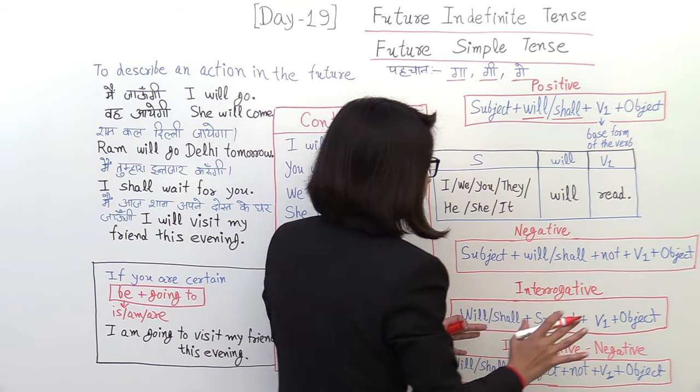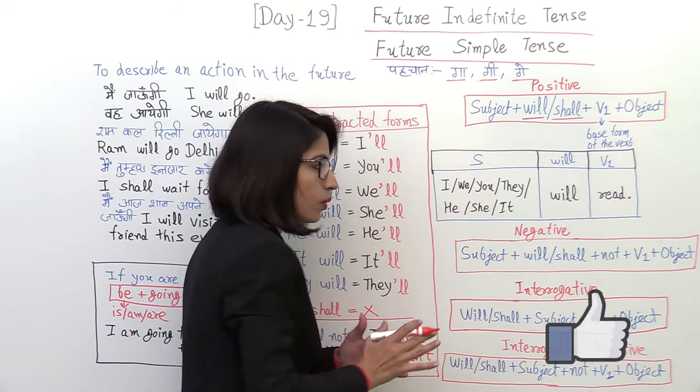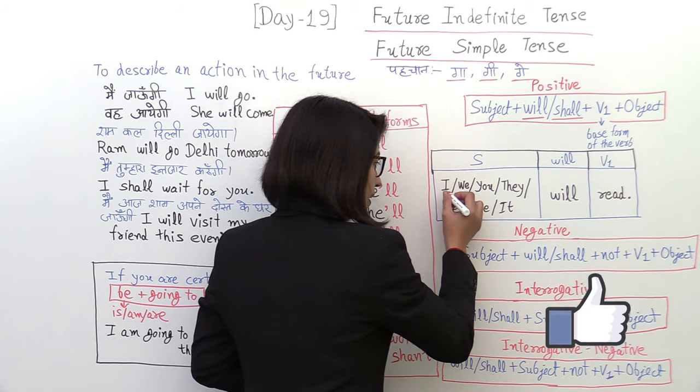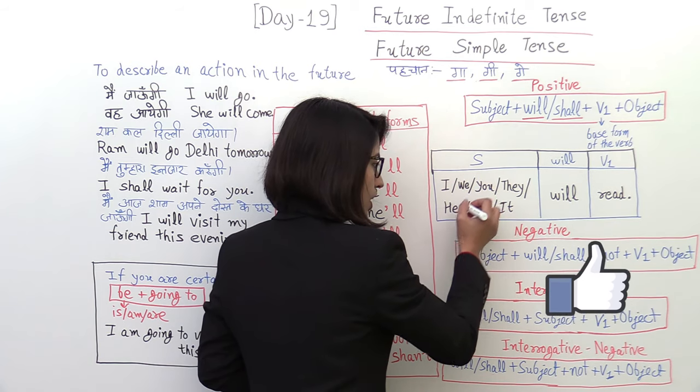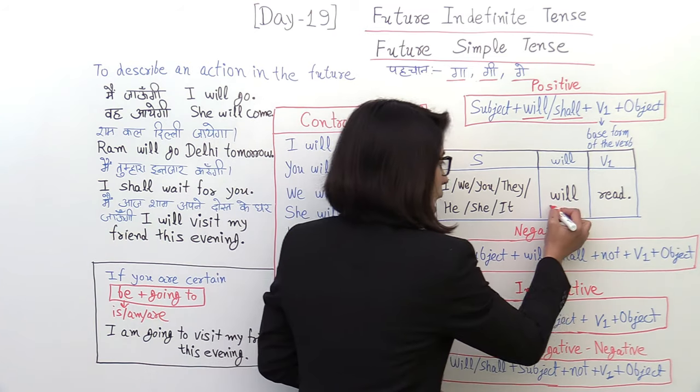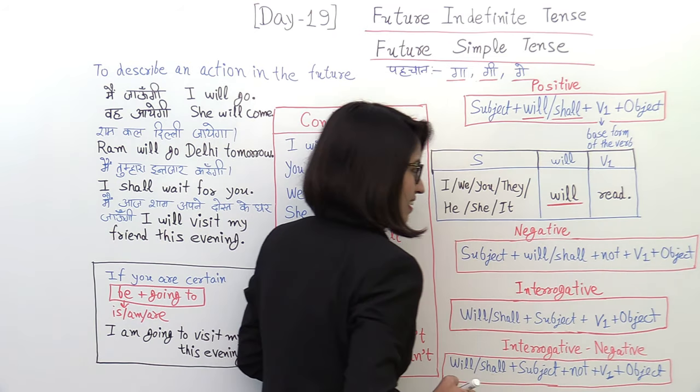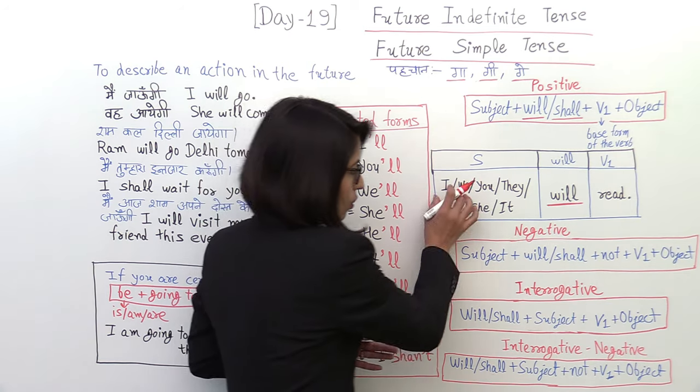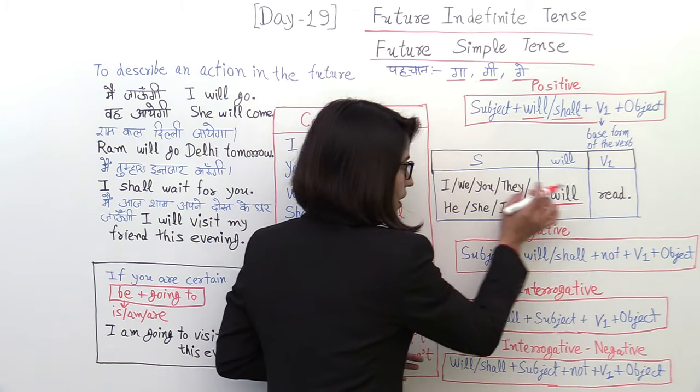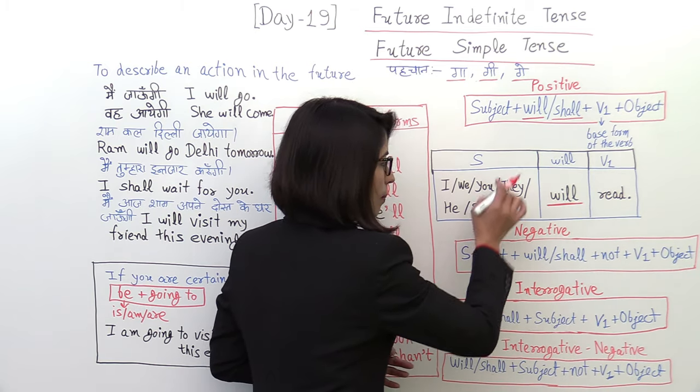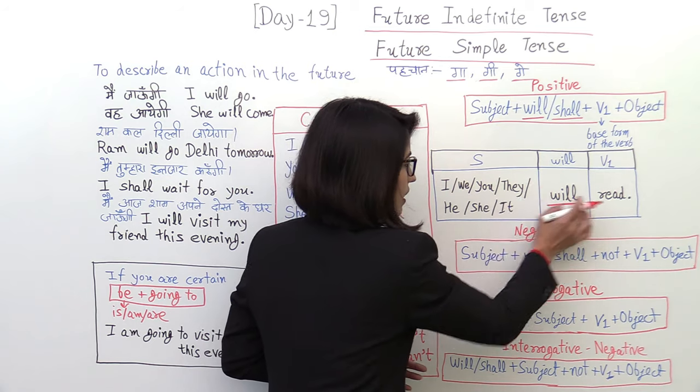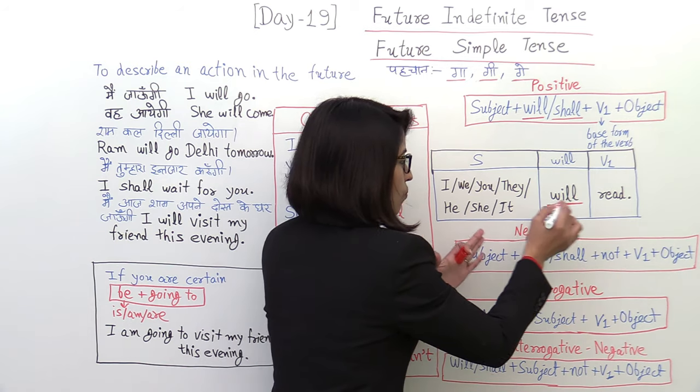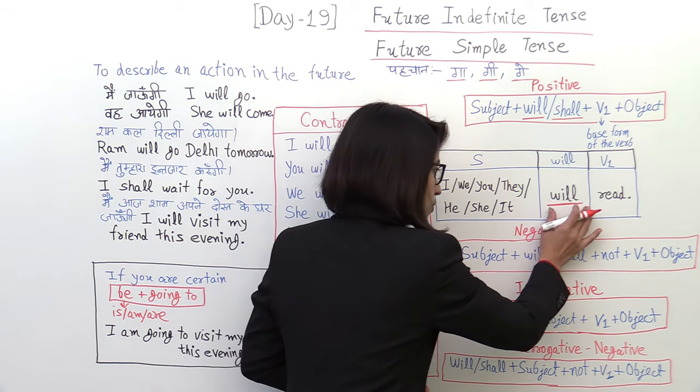Now, the most important thing is that you have to focus on the subject. The subject is singular or plural. You can use will with all subjects. I will read, we will read, you will read, they will read, he will read, she will read, it will read. You can use will with all of them.